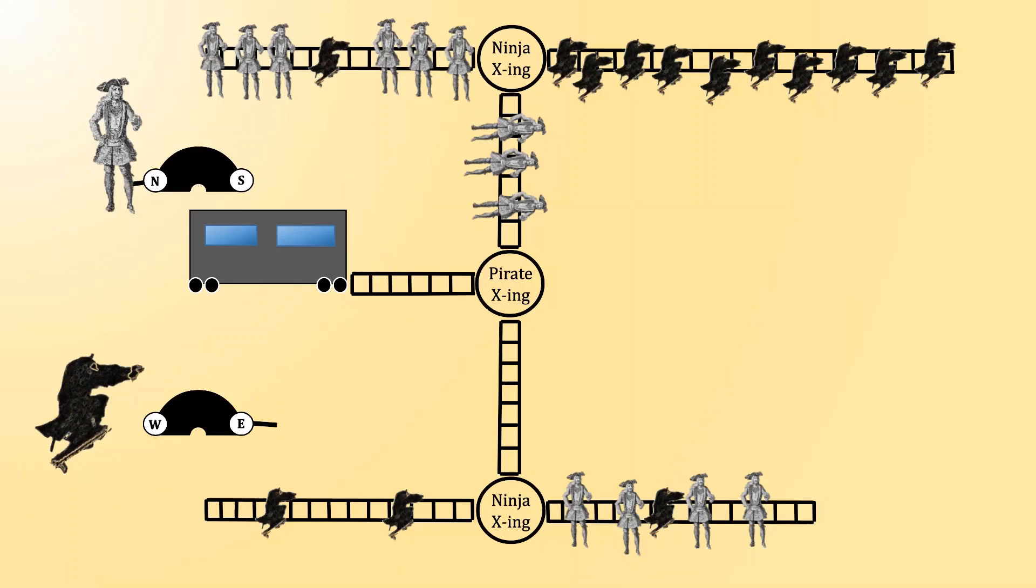If any one of these actors behaves predictably, the other can exploit him. As a consequence, the solution to this game is going to require that both players randomize between their strategies.